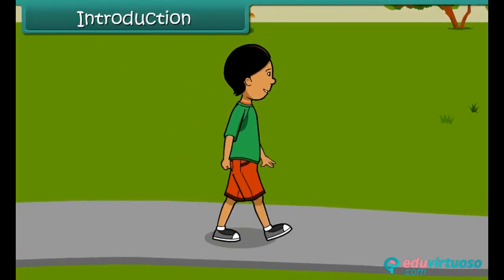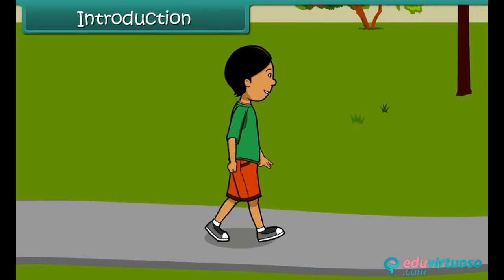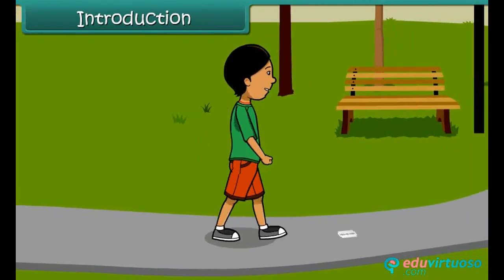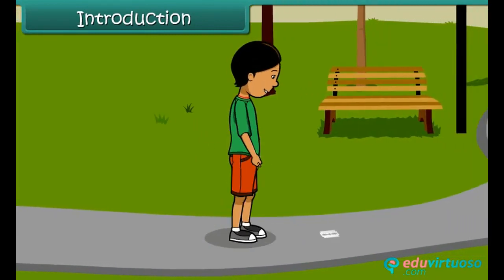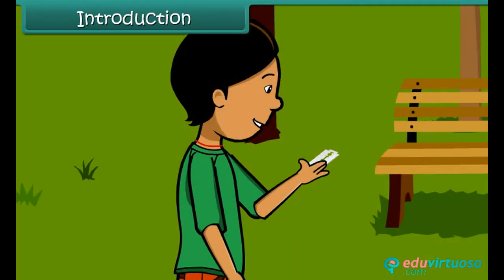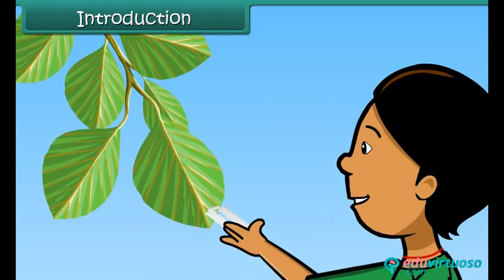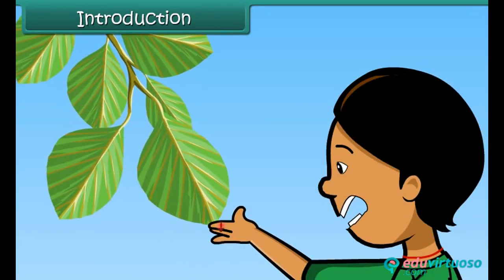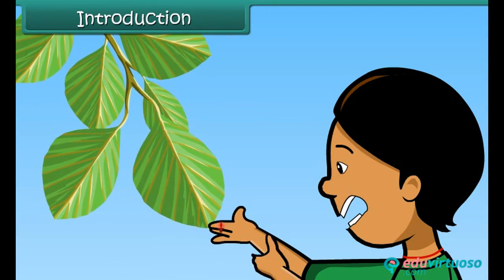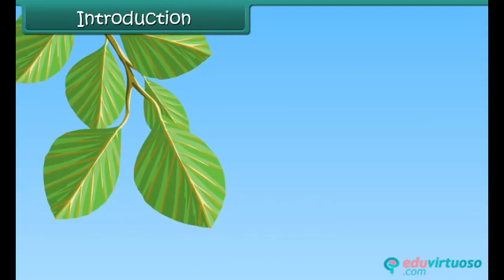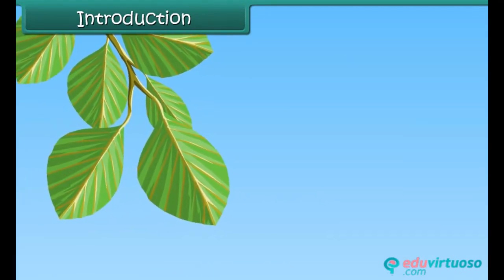Aruna is out playing with her friends. She comes across a blade on the road. She picks it up and tries to cut some leaves with it. Before she realizes, she has cut her finger. She rushes home holding her bleeding finger.